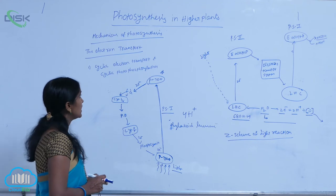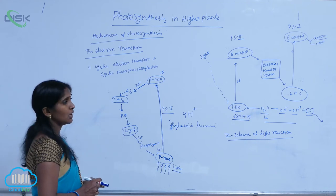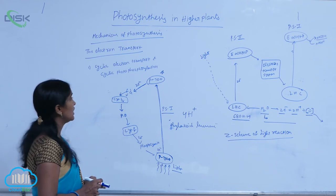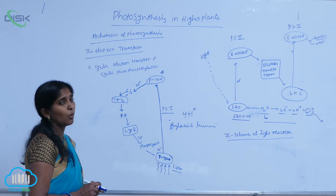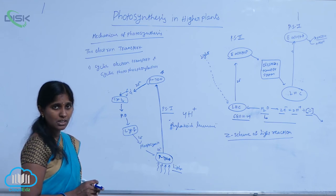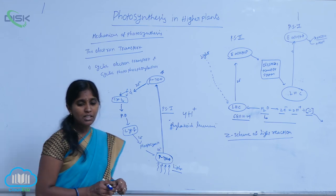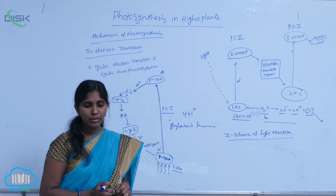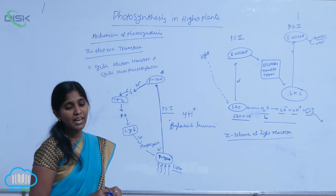Through cyclic electron transportation and cyclic photophosphorylation, only one ATP is released. That is the additional source for the chloroplast activities.